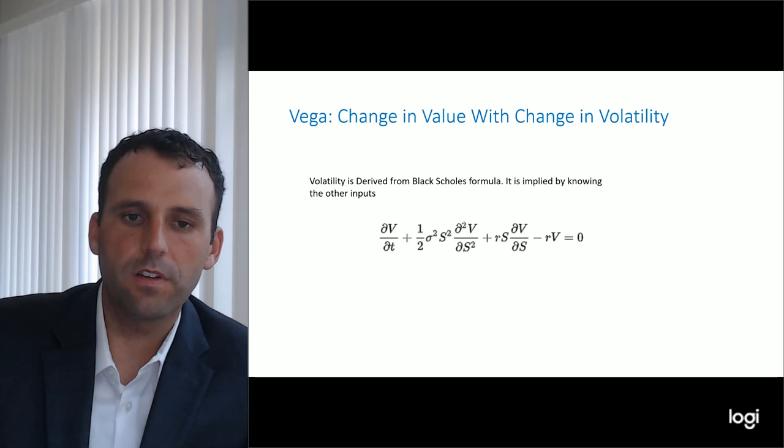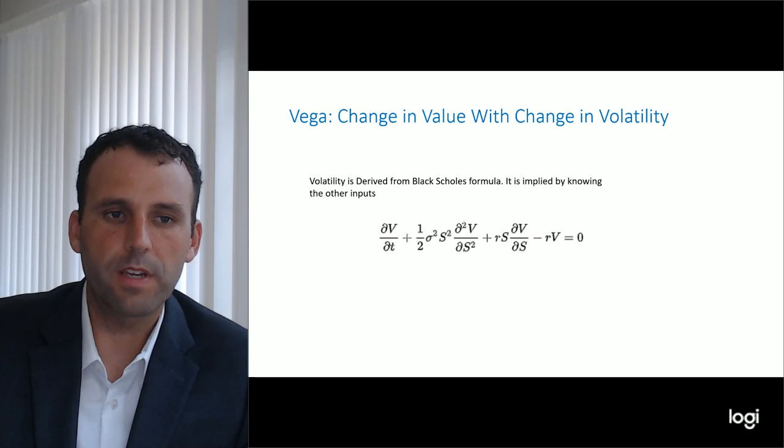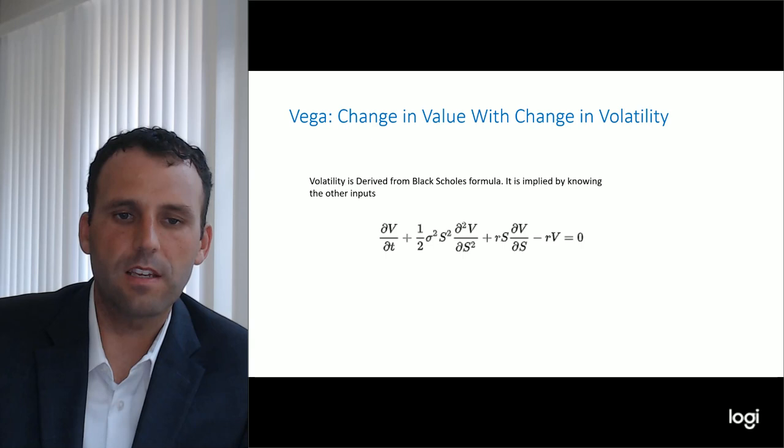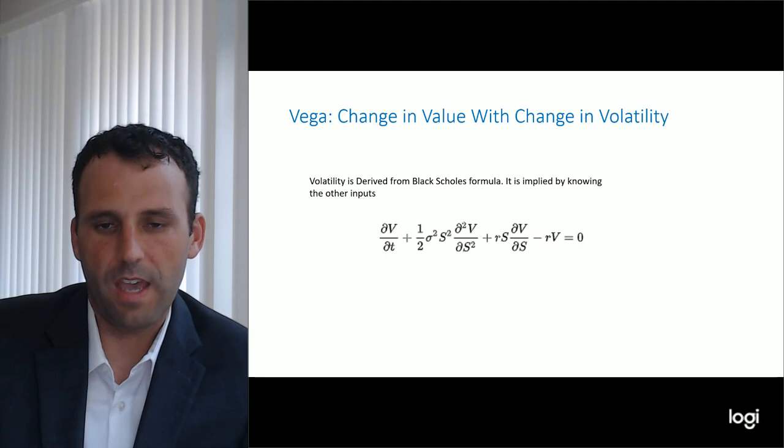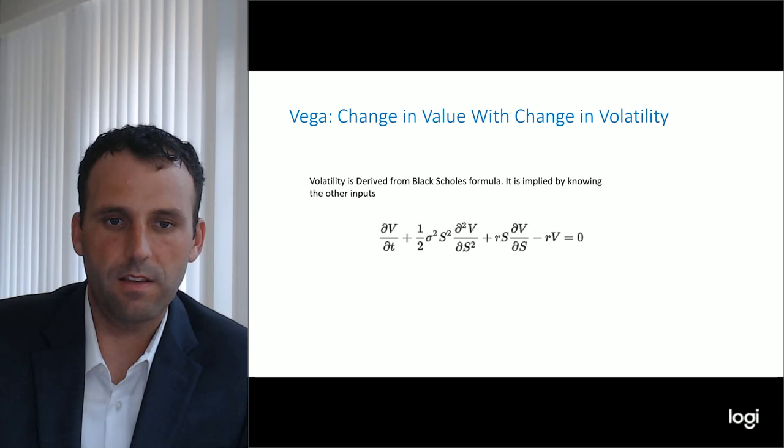VIX is the measurement that a lot of people talk about — it's a measurement of volatility within the S&P 500. But volatility is not the same for every stock because of idiosyncratic events, sector differences, and other systemic risks that make different companies have different implied volatilities, such as beta, leverage, and a variety of other factors.